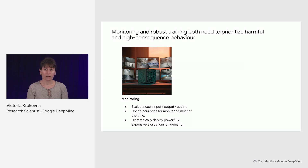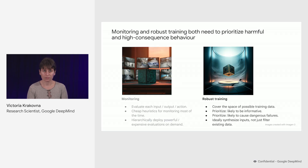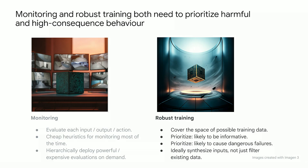Equally important is robust training, where we try to cover the space of possible training data. Of course, we cannot cover all possible training data, so we need to prioritize. We want to prioritize data that's likely to be informative for model training, and also prioritize cases that are likely to cause dangerous failures. In an ideal world, we'd be synthesizing inputs — an active development of possible dangerous cases — rather than just filtering existing data that we already have.